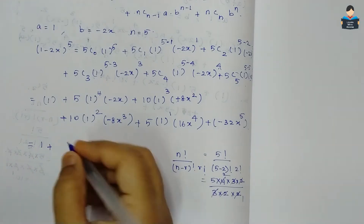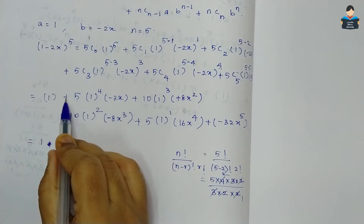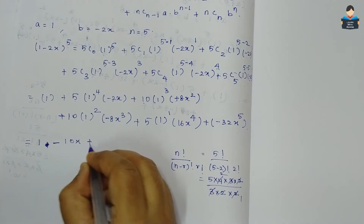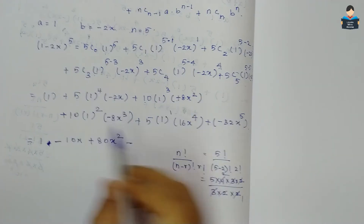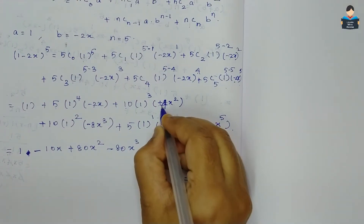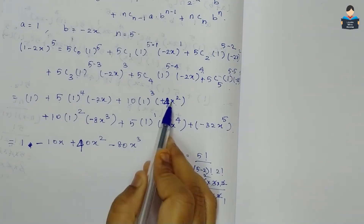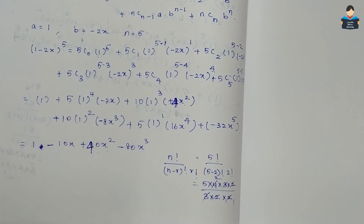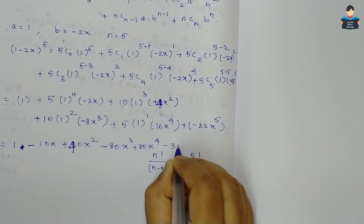So the final expansion of (1-2x)^5 is: 1 - 10x + 40x^2 - 80x^3 + 80x^4 - 32x^5.